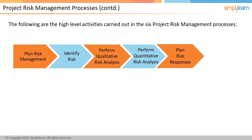The sixth and last process is control risks. This process focuses on implementing risk response plans, tracking identified risks, monitoring residual risks, identifying new risks, and evaluating risk process effectiveness throughout the project. In the next screen, we will look into the flow of all six processes and how they work logically.